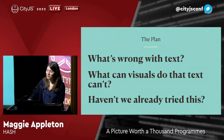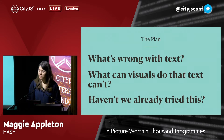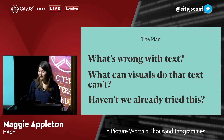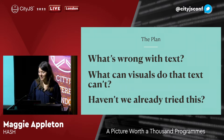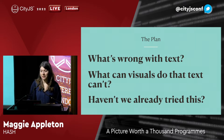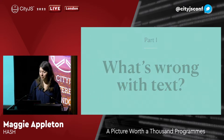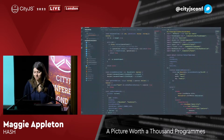So we're going to explore this topic through three questions. We're first going to ask what's wrong with text. We're then going to ask what can visuals do that text can't. And finally, we're going to go on a brief history tour to find out, haven't we already tried this? To ruin the ending — yes, lots of people in the past have explored ways to make programming more visual. We're going to look at what's already been done and what opportunities lie ahead.